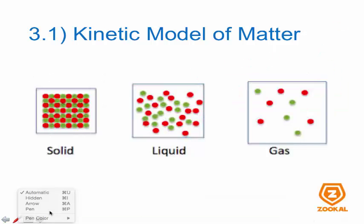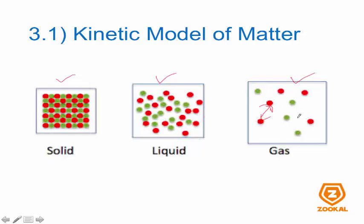In this slide, I have the diagram for solid, liquid, and gases. In solids, they are in a really orderly manner and there is little spacing between the molecules. For liquids, there are larger spacings between the molecules and they are in no particular order. For gases, the spacing between the molecules is really large and they are in no particular order as well.